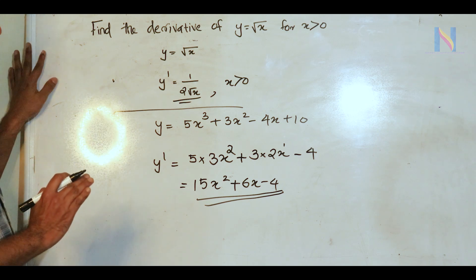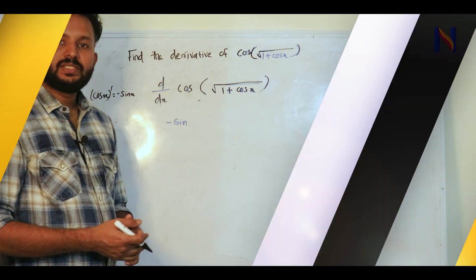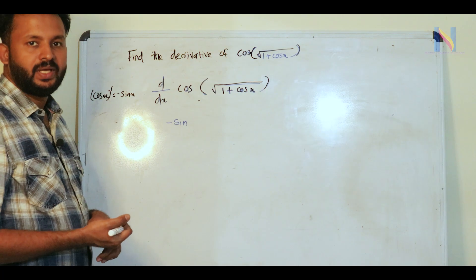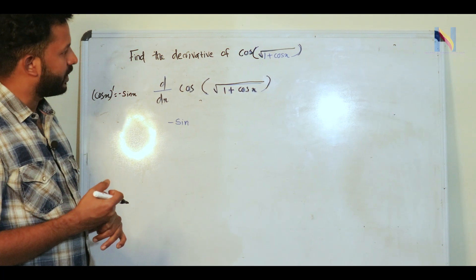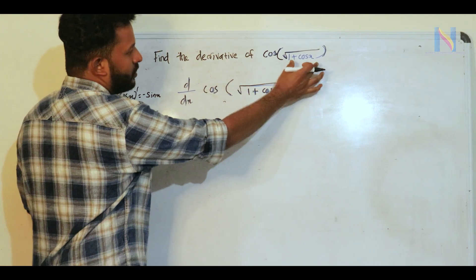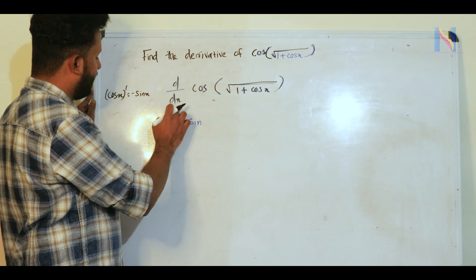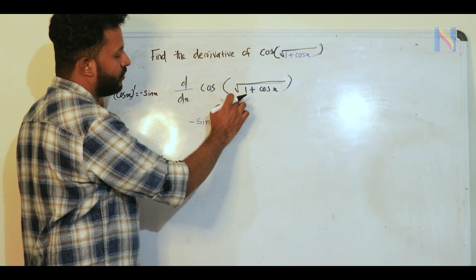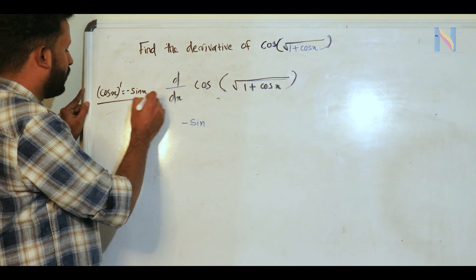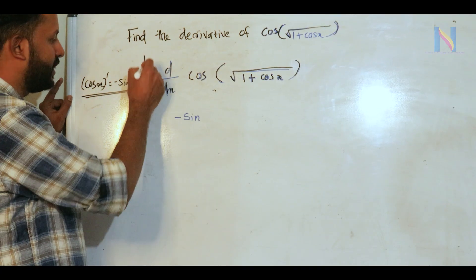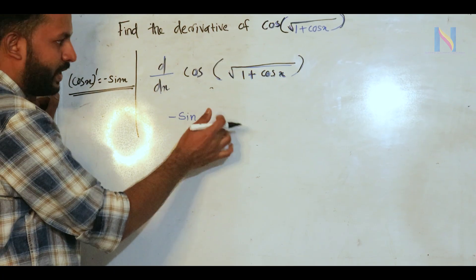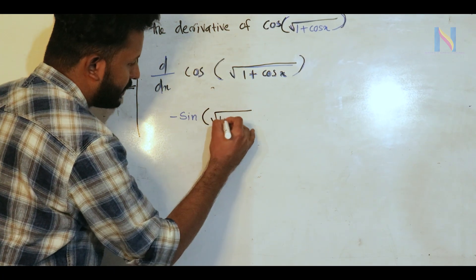The next problem: find the derivative of cos(√(1 + cos x)). This uses the chain rule. The derivative of cos of a function gives -sin of that function. So d/dx of cos(√(1 + cos x)) gives -sin(√(1 + cos x)) multiplied by the derivative of the inner function.